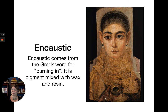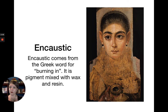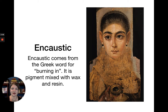What does encaustic mean? It comes from the Greek word for 'burning in.' What it is is pigment — the crushed color pigment — mixed with wax and resin. In this case the wax is the vehicle; the wax is what's carrying the pigment. On the right here we have an ancient example of encaustic painting: a death mask from ancient Egypt. This is a painting in encaustics on wood that would have been placed over the mummy in the sarcophagus — a portrait of the dead person's face placed above her in her coffin.